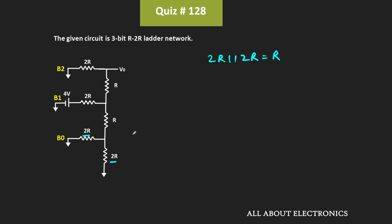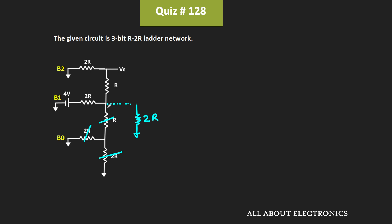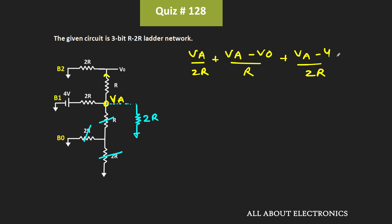That equivalent resistor R is in series with the adjacent resistor R, giving an equivalent resistance of R plus R equals 2R. Now let us apply KCL at node VA. Applying KCL: VA divided by 2R, plus VA minus V0 divided by R, plus VA minus 4 divided by 2R, equals 0. Simplifying, this gives VA plus 2 times (VA minus V0) plus (VA minus 4) equals 0.